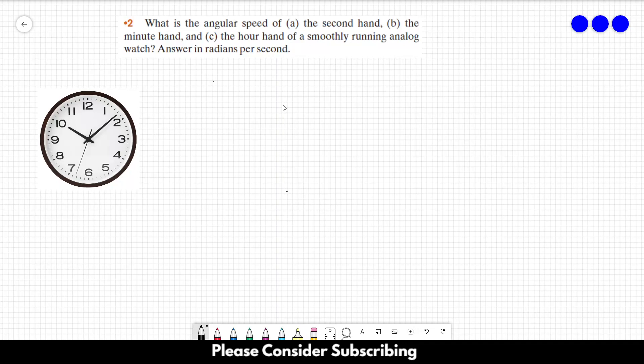Number two: What is the angular speed of (a) the second hand, (b) the minute hand, and (c) the hour hand of a smoothly running analog watch? Answer in radians per second. So this is some old watch. You don't see them anymore, at least not as often as before.